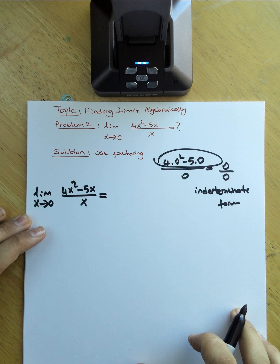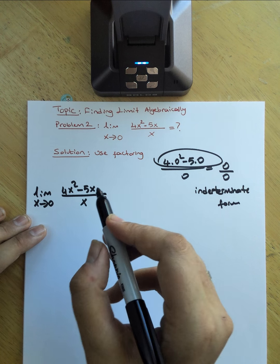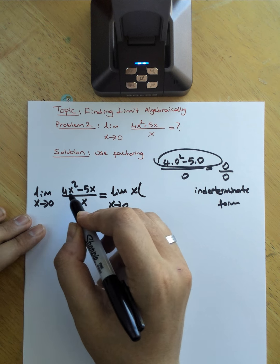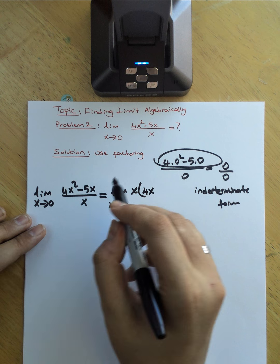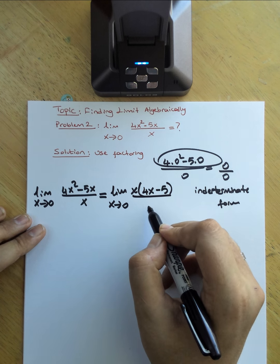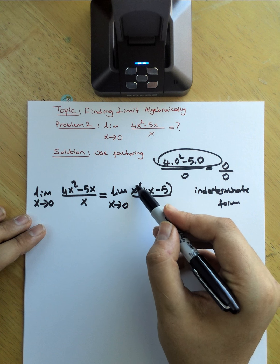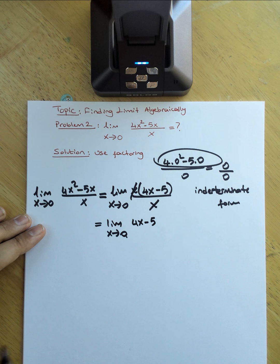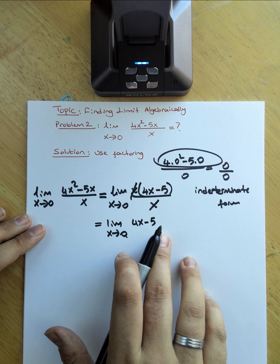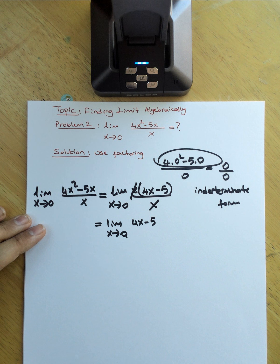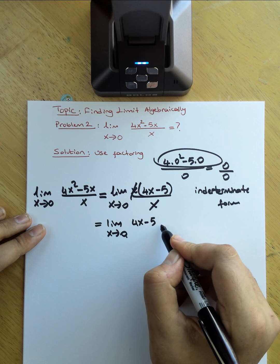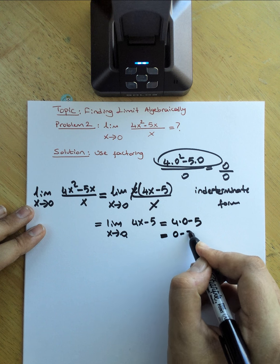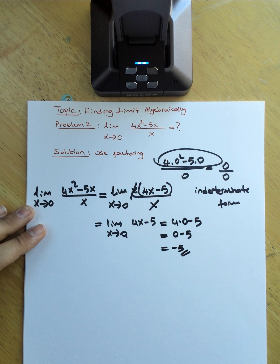Factoring out x from the numerator: 4x squared gives 4x and negative 5x gives negative 5, so the numerator becomes x times (4x minus 5) over x. We can cancel the x's, leaving limit x approaches 0 of 4x minus 5. Substituting 0: 4 times 0 minus 5 equals negative 5. So our second limit is negative 5.